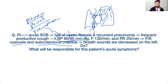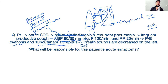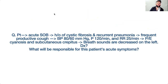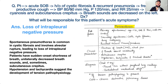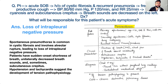Always think of tension pneumothorax when a patient is severely hemodynamically unstable with mediastinal shift. In tension pneumothorax, the intrapleural pressure becomes positive — there is loss of negative intrapleural pressure. This is your key answer.